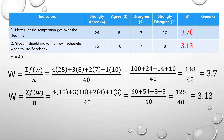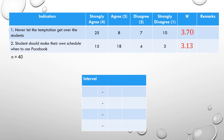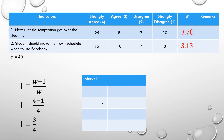For indicator one, the weighted mean is 3.70. The answer could be strongly agree, agree, disagree, or strongly disagree, but we need to establish an interval. The formula for the interval size is (weight − 1) / weight. Since we are using 4 weights, that is (4 − 1) / 4 = 3/4 = 0.75.